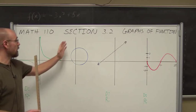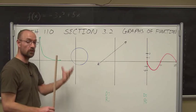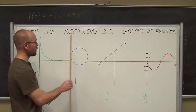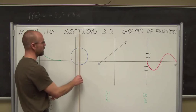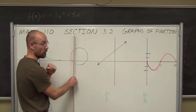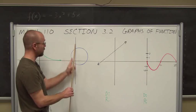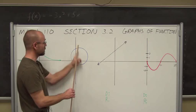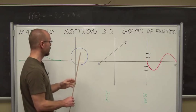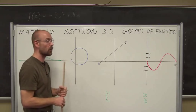Let's use the vertical line test to determine if this next graph is a function. We recognize this as a circle, which we explored in Chapter 2. If I put a vertical line anywhere on this graph, we see it intersects in more than one place. So this is not a function because x repeats — x maps to this value and this value, two values of y for one value of x.